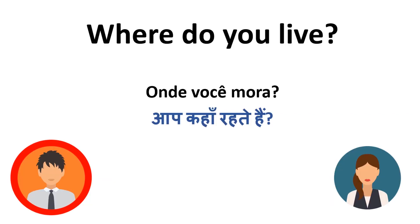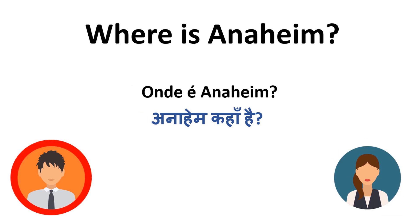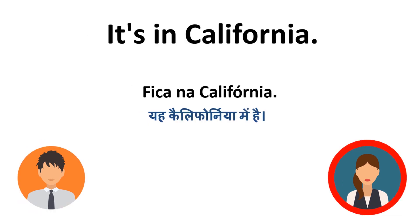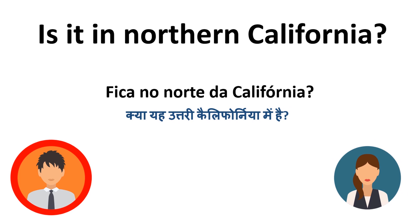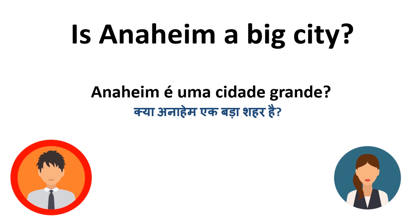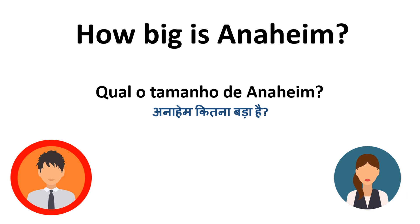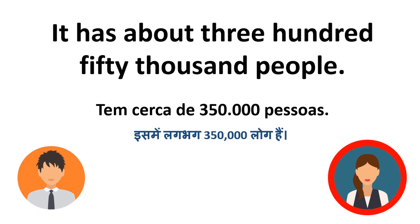Where do you live? I live in Anaheim. Where is Anaheim? It's in California. Is it in Northern California? No, it's in Southern California. Is Anaheim a big city? It's pretty big. How big is Anaheim? It has about 350,000 people.